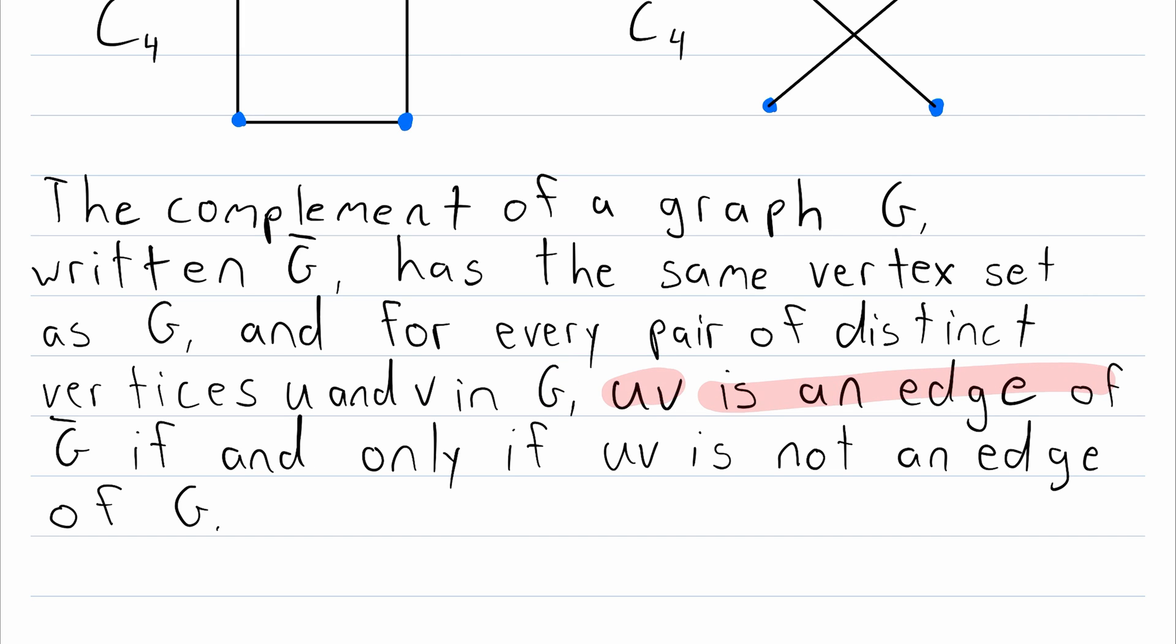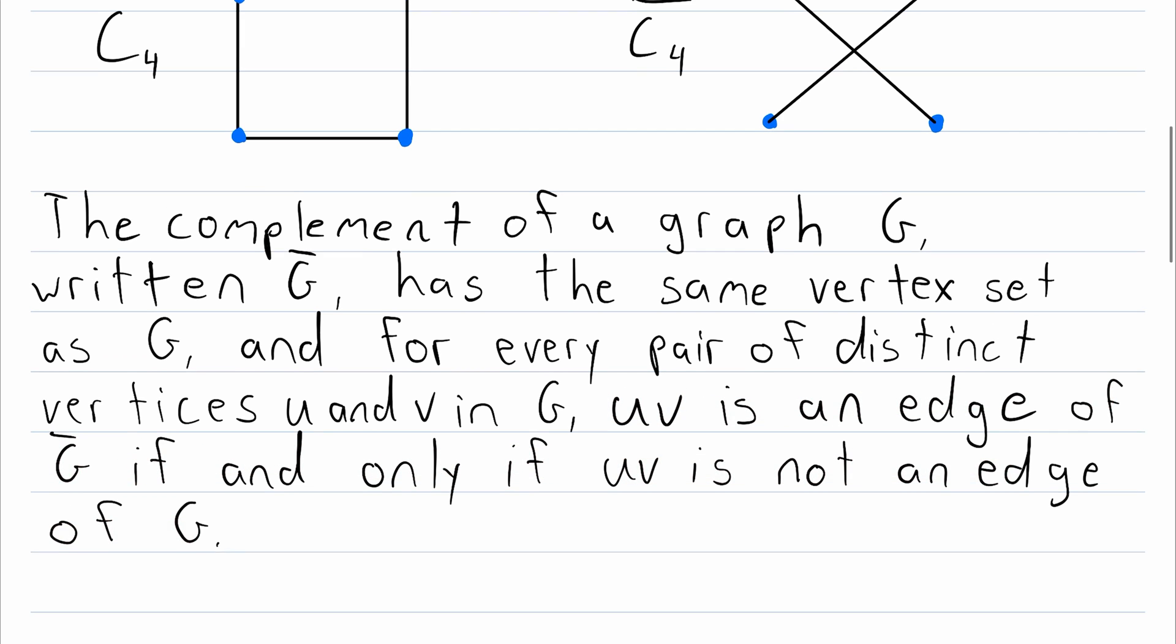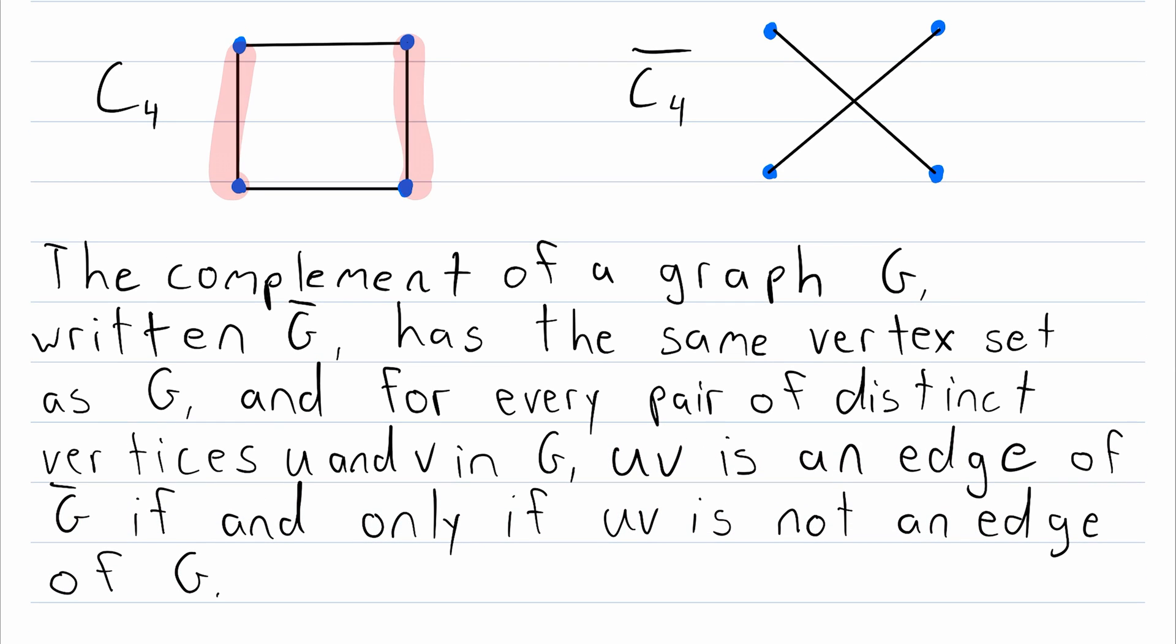UV is an edge of the complement if and only if it's not an edge of the original graph. So like I was saying, you can think of it as the complement having the opposite edge set. Where we have edges in the original graph, we do not in the complement. And where we don't have edges in the original, we do in the complement.